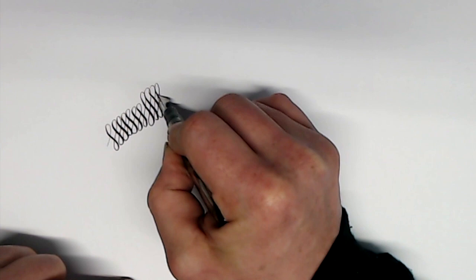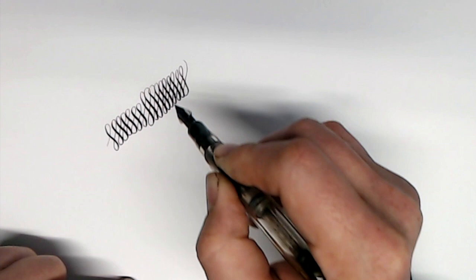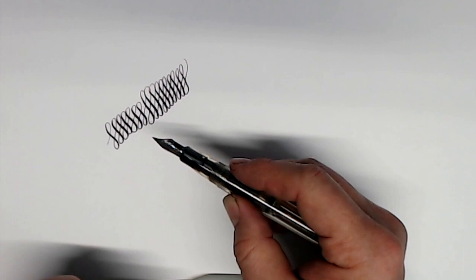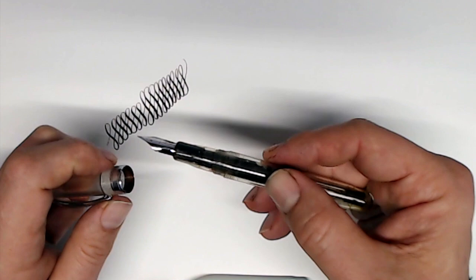You can see that the ebonite feed in this pen absolutely keeps up with no railroading at all. So, this is one of my recommendations for a cheap flex option, a Noodler's Ahab with a No. 6 UltraFlex nib from Fountain Pen Revolution. Really great combination. Though, again, the original nibs on the Noodler's are perfectly good. They just don't flex quite as much. They require a little bit more pressure, and perhaps they're a little tiny bit scratchier.